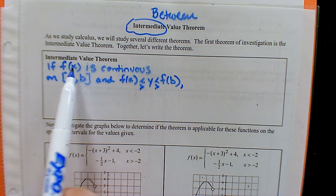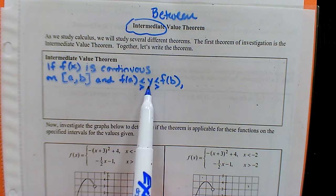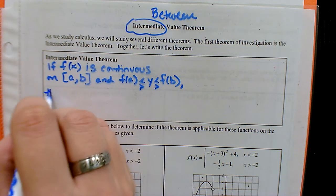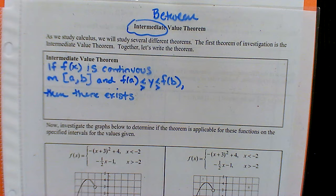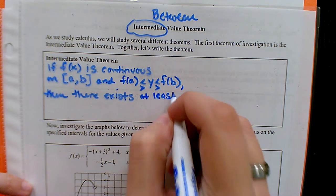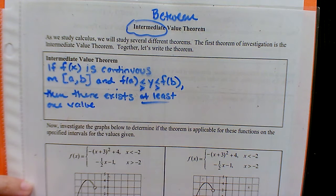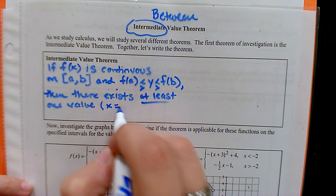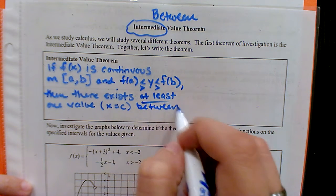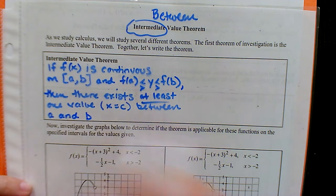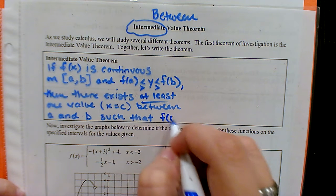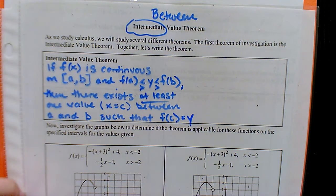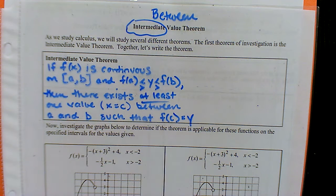Then there exists — that's why it's called an existence theorem, it tells you something is there without telling you what it is or how to find it — at least one value c between a and b, such that if you plug c into the function, you get out that y value which is between f(a) and f(b).